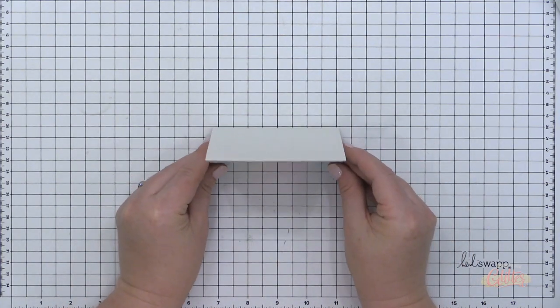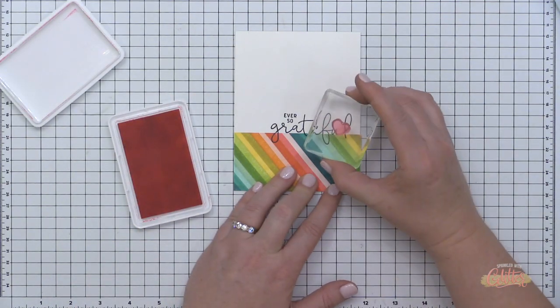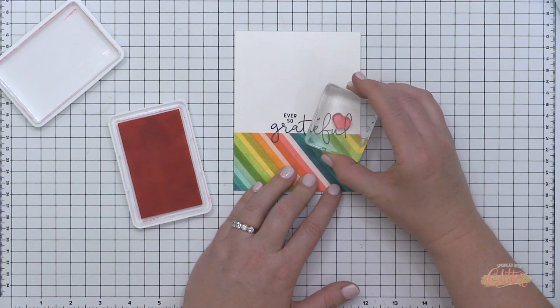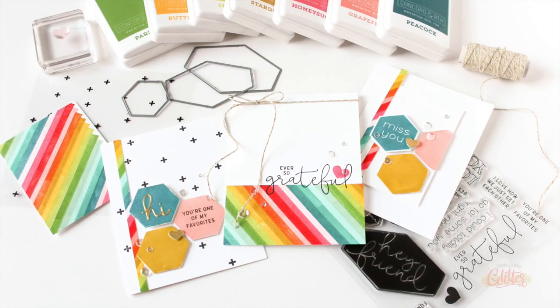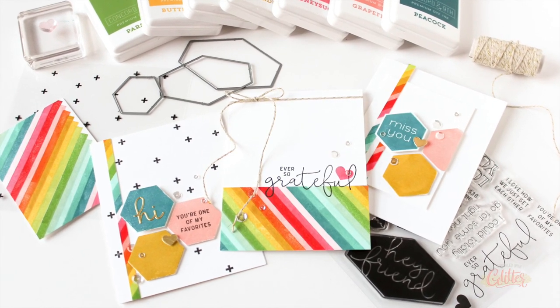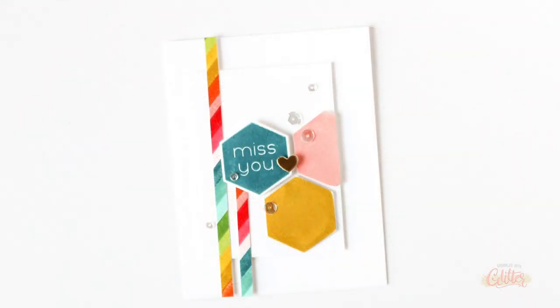I'm just adhering that on using a little tape runner adhesive, and then I'm going to take this little heart stamp from the Hey Bestie stamp set and I'm going to stamp it using the honeysuckle ink right over that stamped greeting there. I finished that off with just a little bit of gold sparkle twine and some sparkling clear sequins.